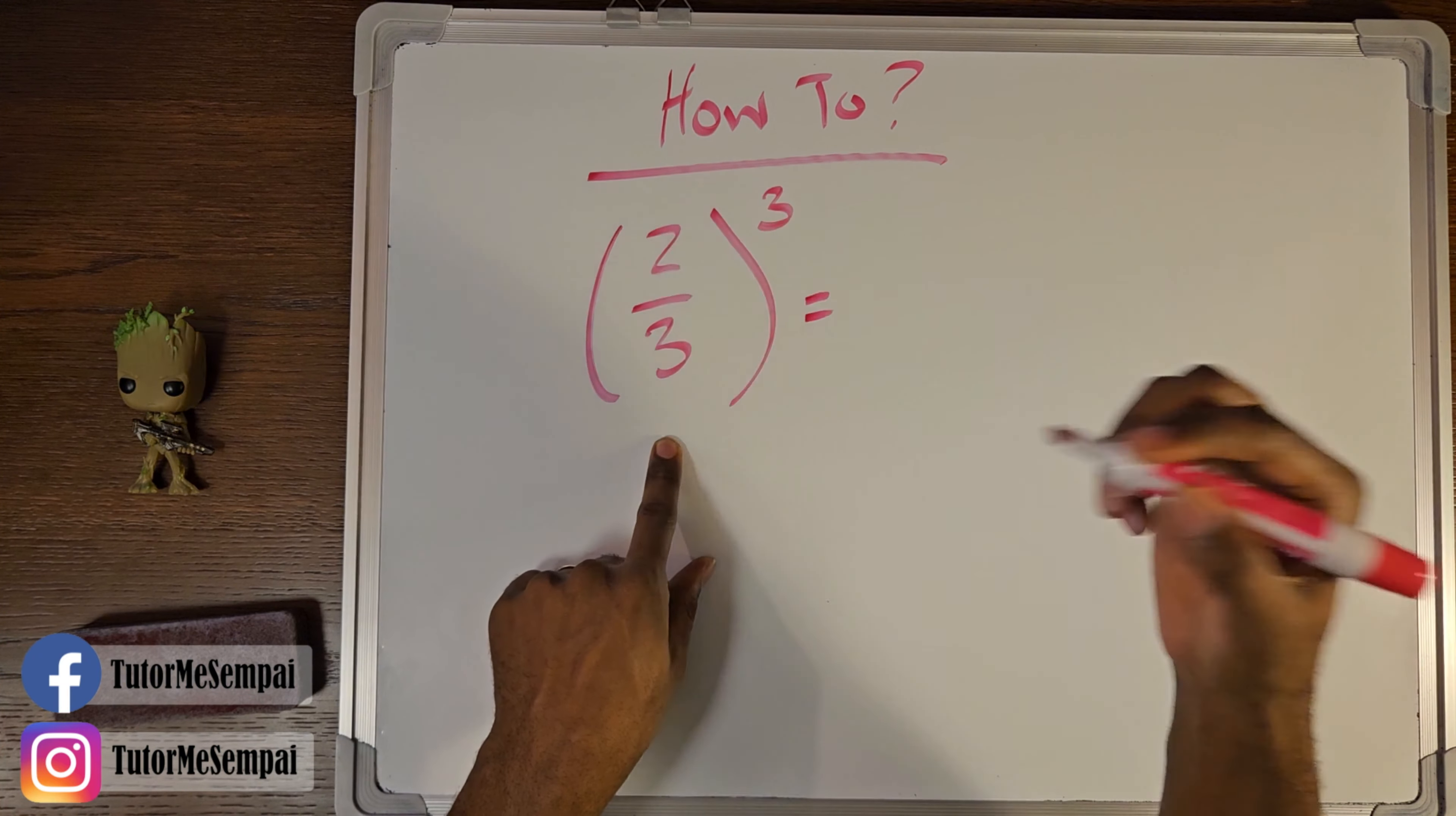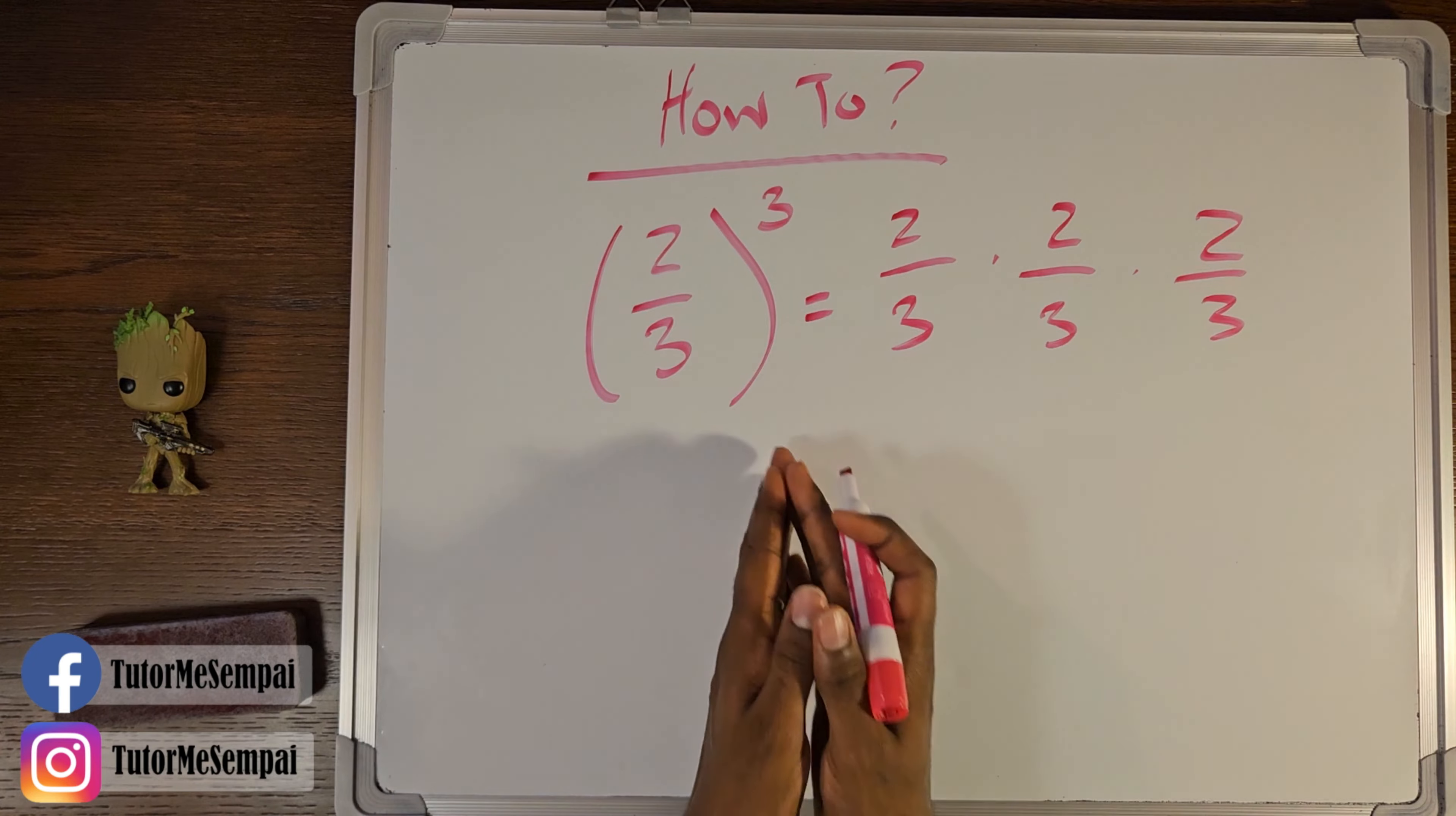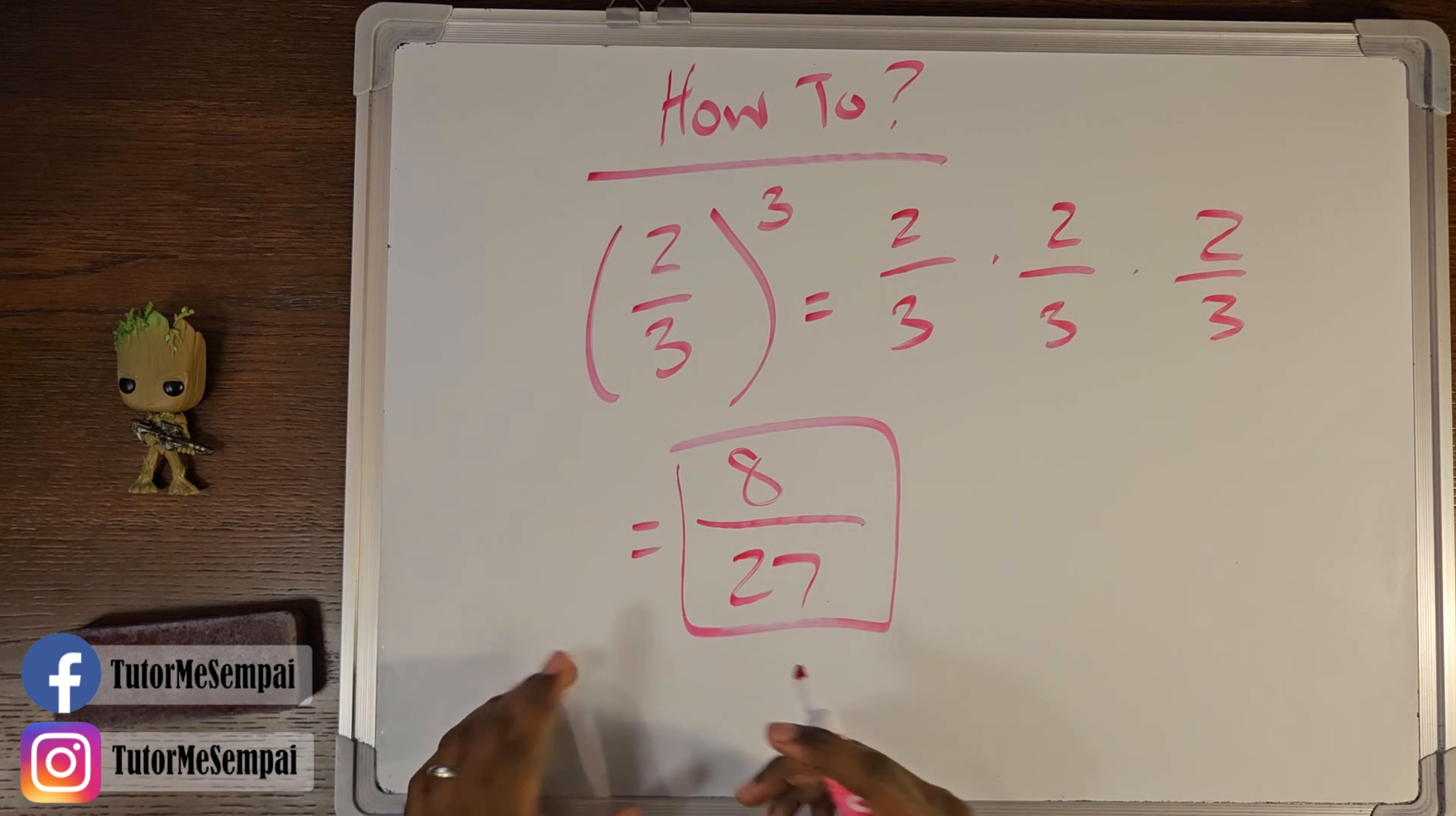So this is simply going to be two over three times two over three times two over three. We have a three in our exponent, so we're going to pretty much replicate this base—the whole base is two over three—three times. And now we've done that, we just multiply across. So two times two is four, four times two is eight, so our answer is going to have an eight in the numerator. Three times three is nine, times three is 27, so our answer for this is just going to be eight over 27.